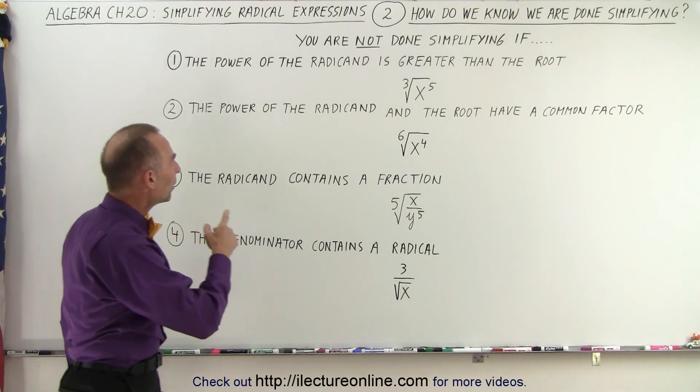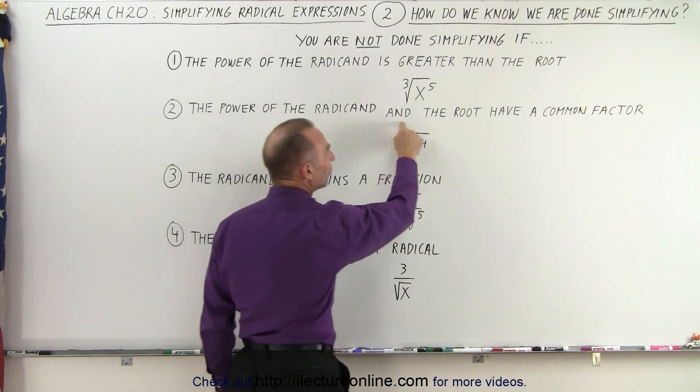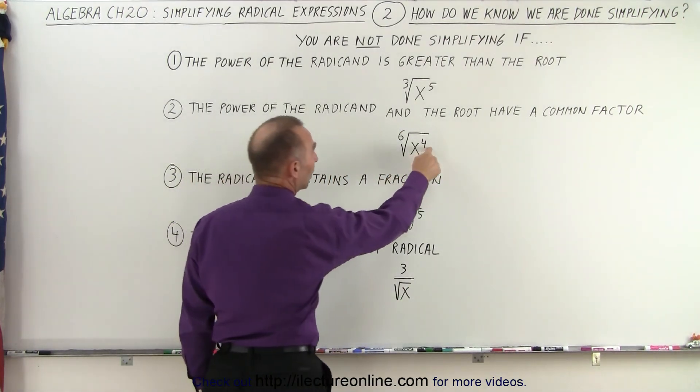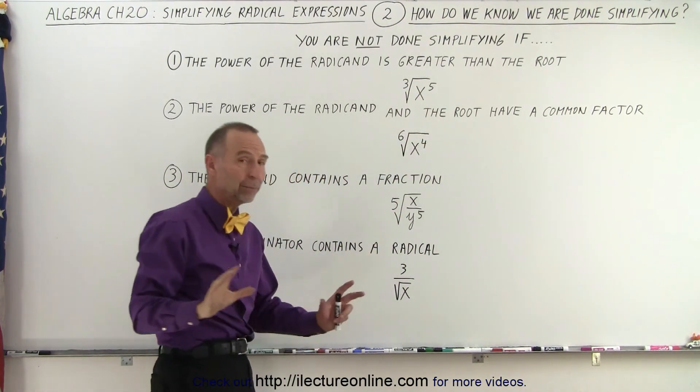Secondly, the power of the radicand, again, the power of the item inside the radical sign, and the root have a common factor. So, you can see here that the four is smaller than the six, so it doesn't meet this condition, so you might think, oh, I'm done.